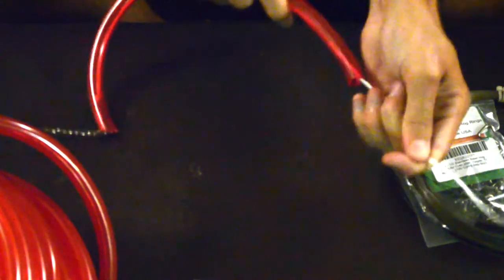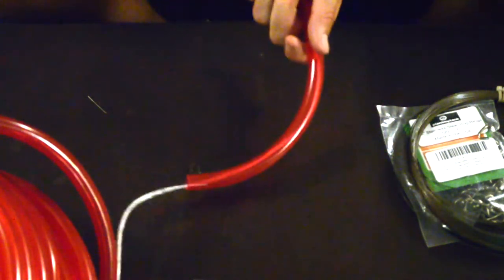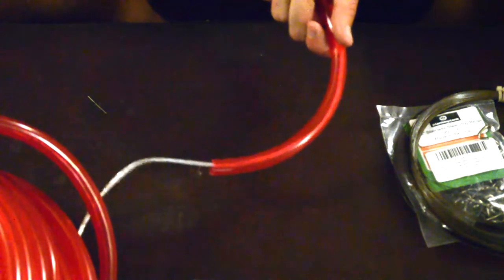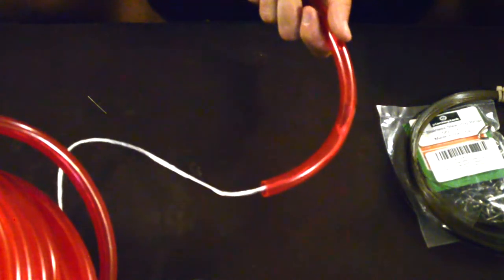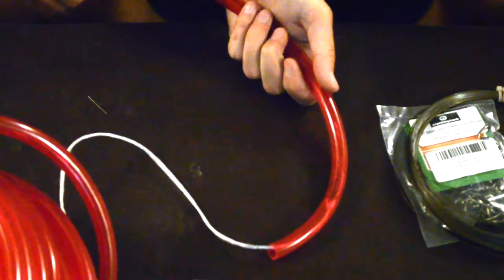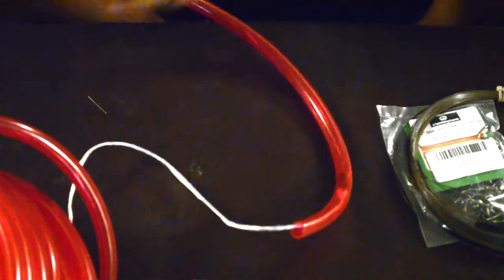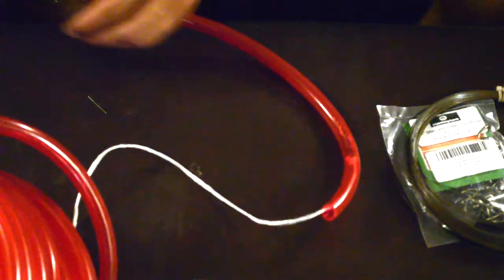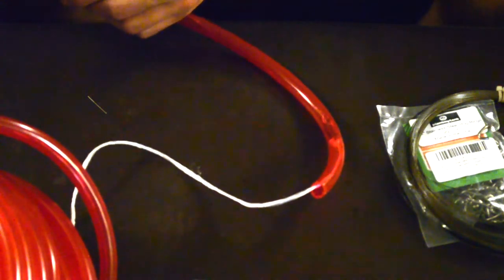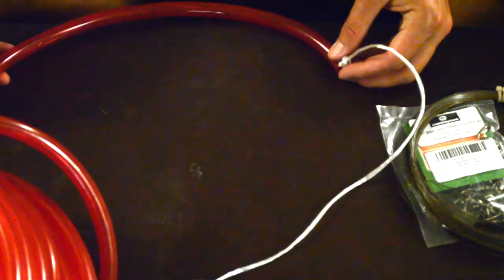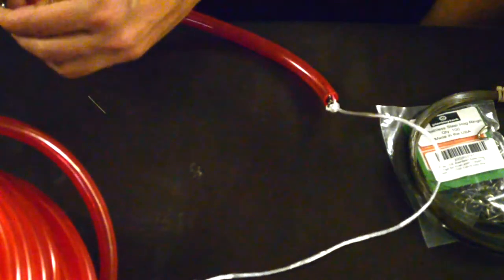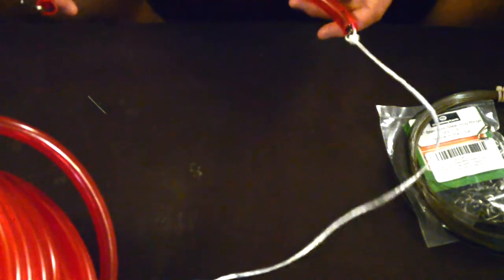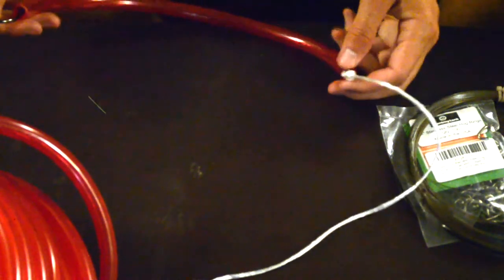And at this point, just start working the swivel and the skeleton through the tube. You gotta hope it lines up pretty good. Because otherwise we gotta cut a new tube. Alright, so this tube lined up pretty good. The hook is a good amount in and out at the same time.